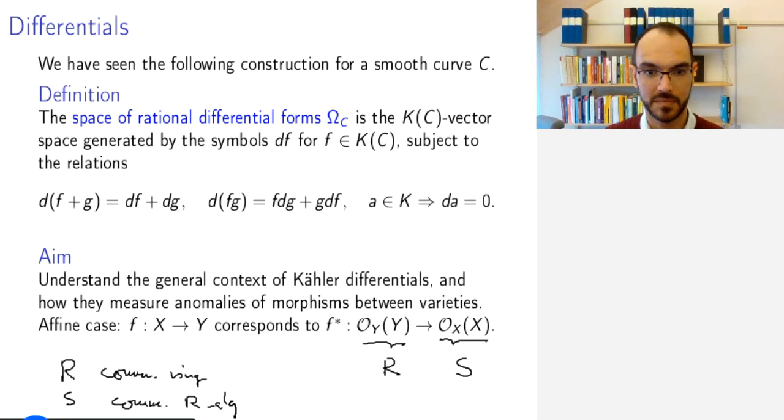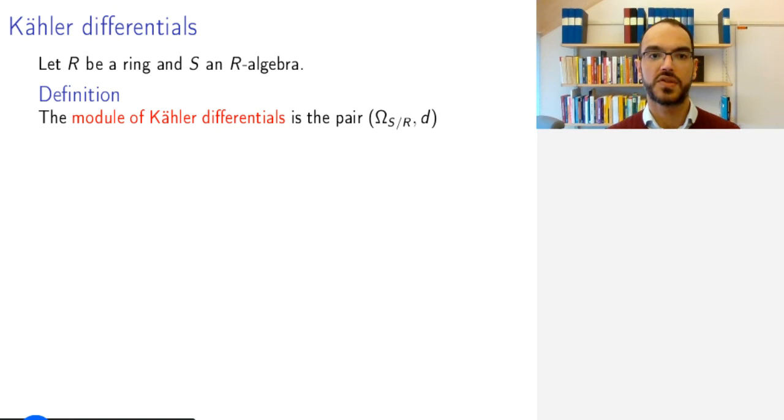This is the context we will start with, and then by gluing we will get the general notion. So let R be a ring, commutative and unital as usual, and S be an R-algebra, again commutative and unital.